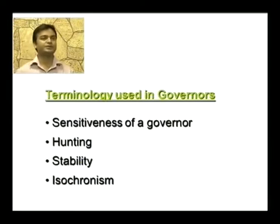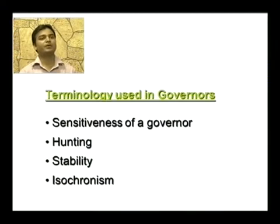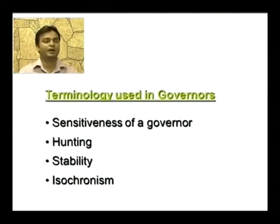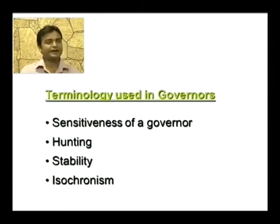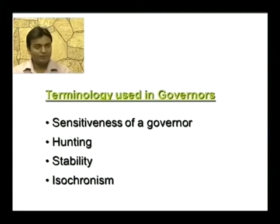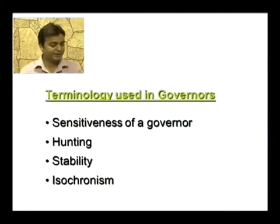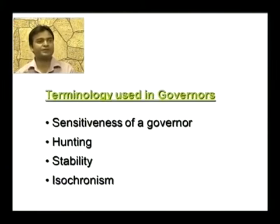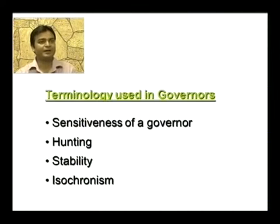The various terminology used in a governor: first is the sensitiveness of a governor. Suppose we have two governors A and B, which are running at the same speed. When the speed increases or decreases by a certain amount, suppose the lift of governor A is more than the lift of governor B, then governor A is said to be more sensitive than governor B.